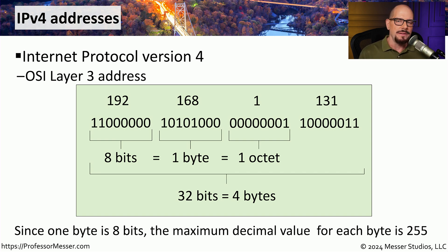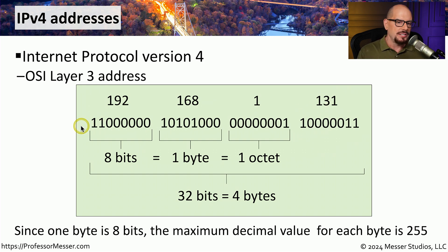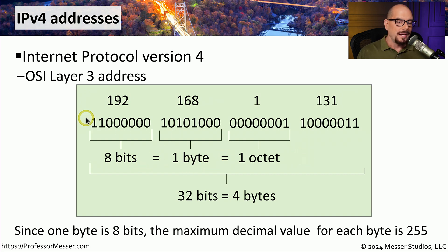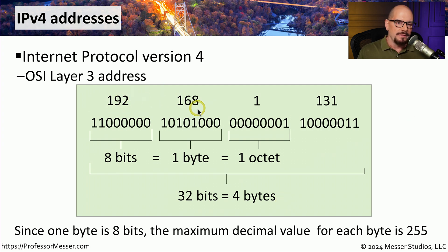Let's break apart an IP version 4 address and see what it's made of. Take the address 192.168.1.131 — we refer to these four values as octets, because they consist of eight individual bits. You can see the same IP address broken out into four groups of eight bits. These eight bits are described as one byte or one octet. Counting all the bits, there are 32 total bits in an IPv4 address — the same as four bytes or four octets — and the maximum decimal value for any one of those groups is 255.